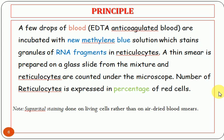One important point: new methylene blue is known as a supravital stain, meaning we are staining living cells rather than dead cells. In Leishman stain, we fix the smear and stain dead cells. But with new methylene blue, we are staining the living reticulocytes.